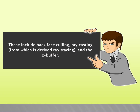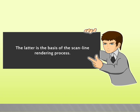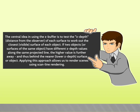These include back-face culling, ray casting (from which ray tracing is derived), and the z-buffer. The z-buffer is the basis of the scan line rendering process. The central idea is to test the z-depth, i.e. the distance from the observer, of each surface to find the closest (visible) surface. If two surfaces have different z-depth values along the same projected line, the higher value is further away. This approach allows rendering using scan line rendering and ray tracing.